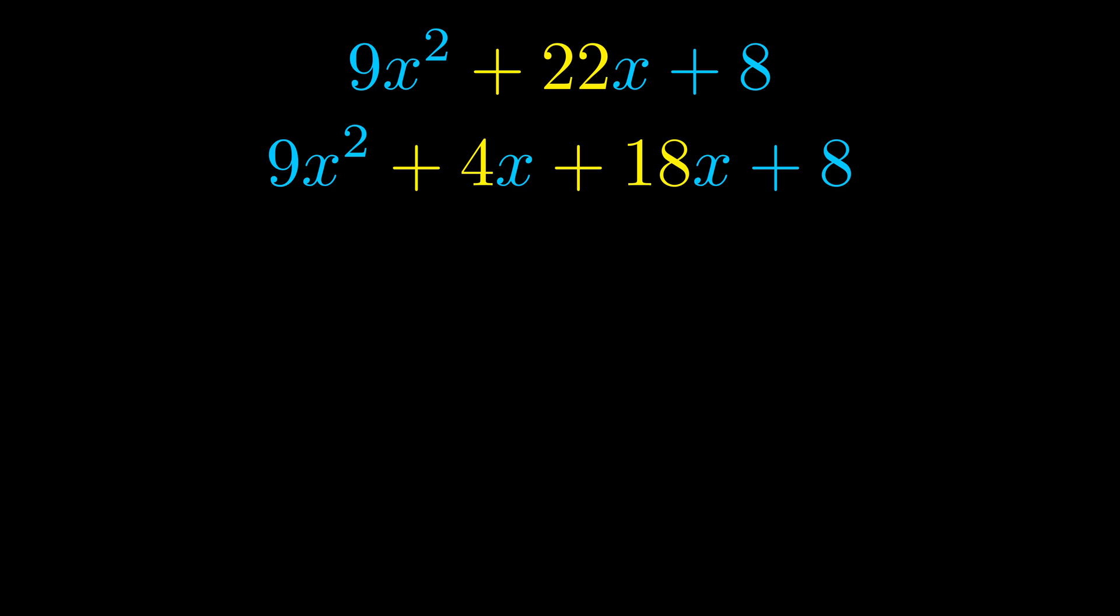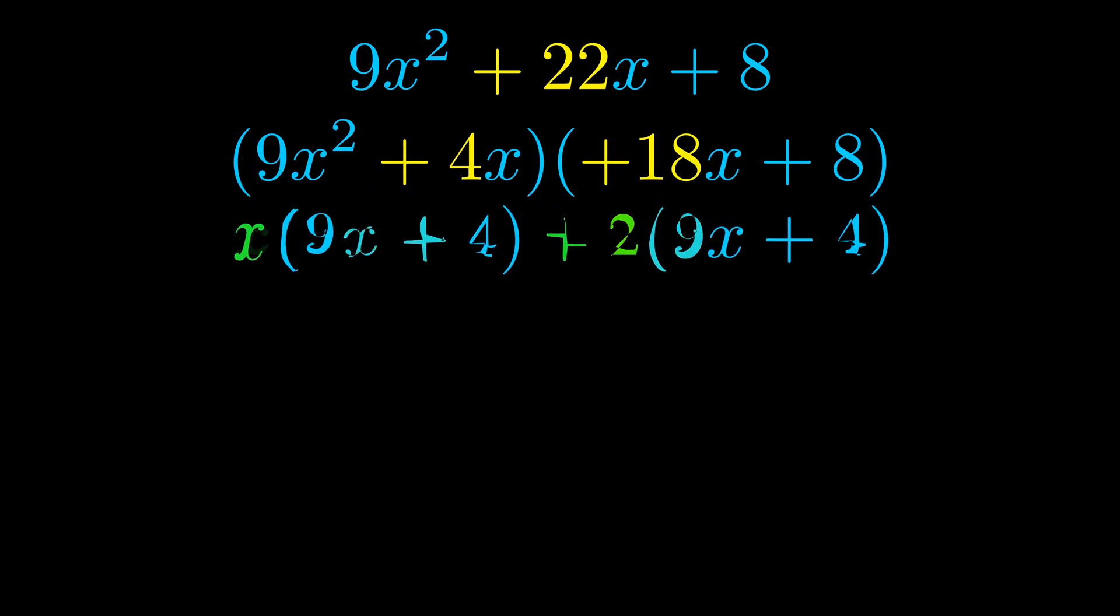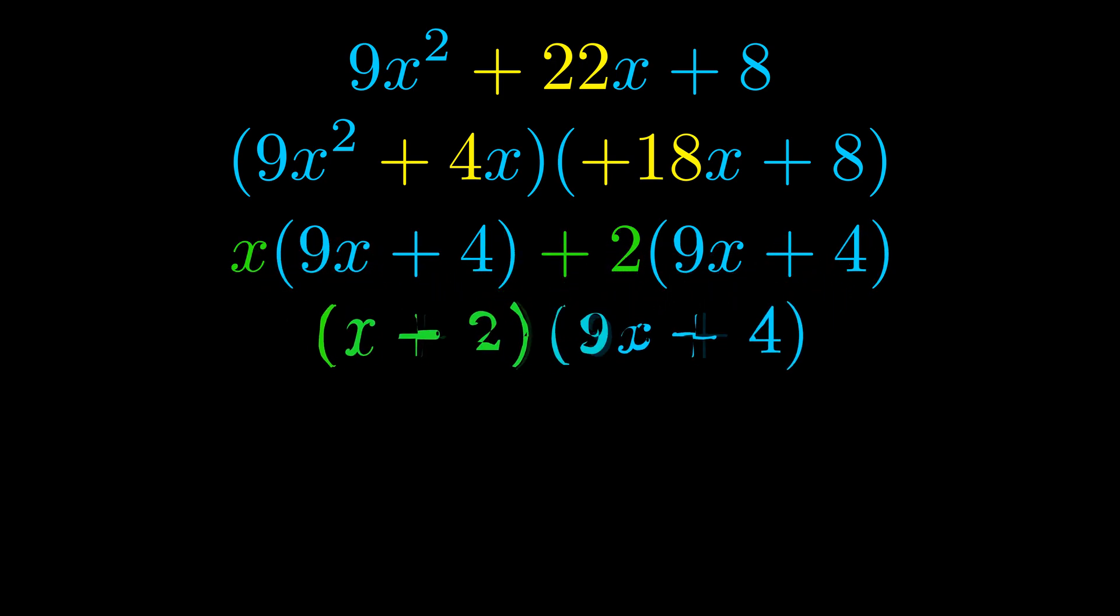Once we've done this, we go ahead and put parentheses around the first term and the last term. And we do that so that we can take the greatest common factor out of both terms. We can see the greatest common factor is now outside in green. Notice also how what remains inside of the parentheses is the same in both cases. The blue values are the same.